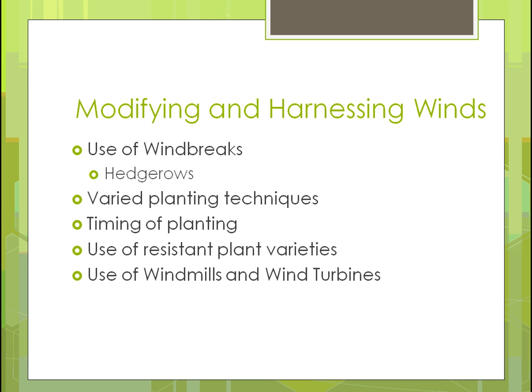We can use varied planting techniques — planting more than one crop, or arranging plants so they're less affected by wind coming from a certain direction. We can also change the timing of planting to avoid windier periods of the season. Genetically, new resistant plant varieties are being developed. And of course, to help modify the wind, we can use windmills or wind turbines, which won't eliminate all wind but put it to very good use.